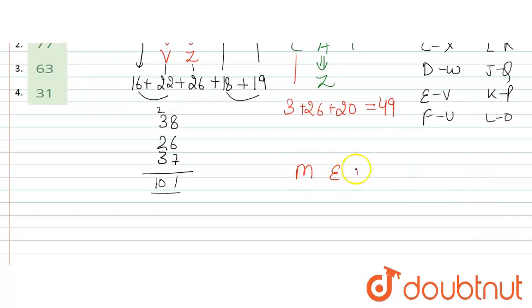Now for MEAL. So M E A L, what will it be? So M is 13. E ka opposite V hota hai, A ka opposite Z hota hai. So here E ka opposite V hai.